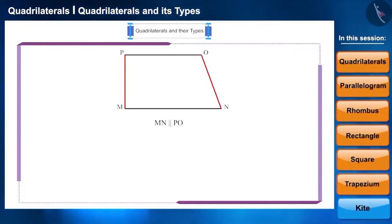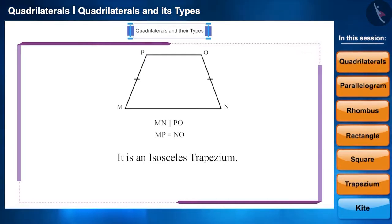Consider the sides which are not parallel. What if they are equal? Such trapeziums are called isosceles trapezium.